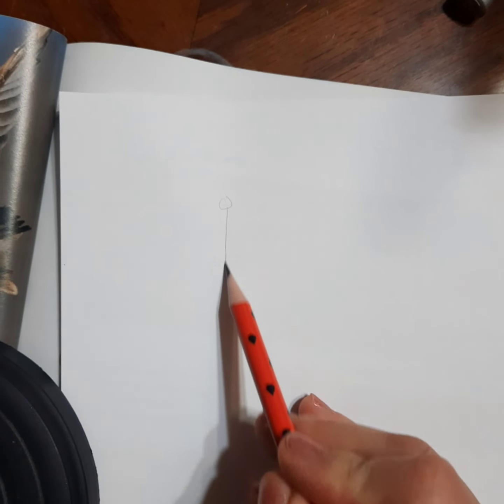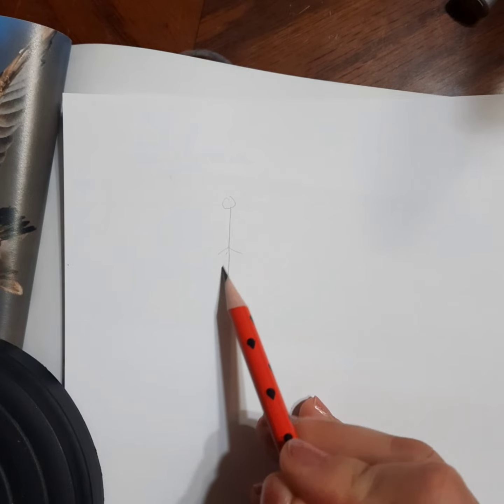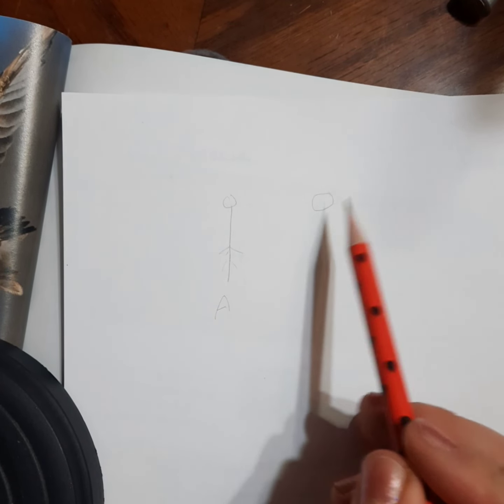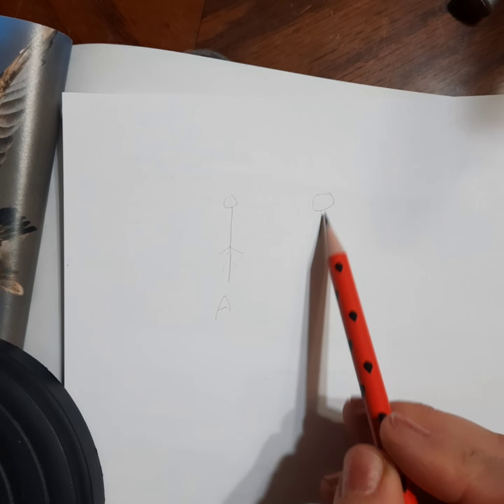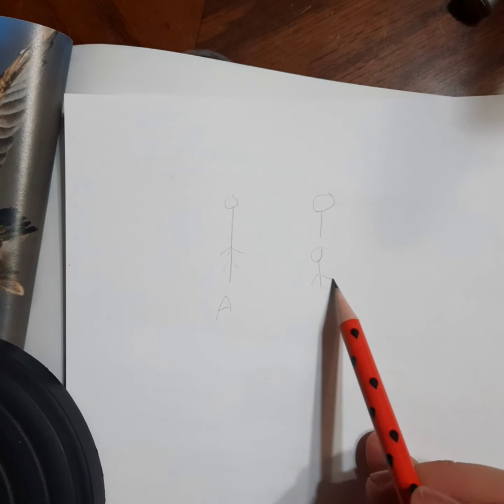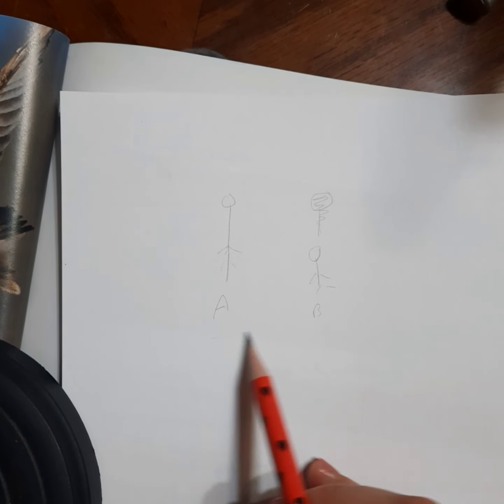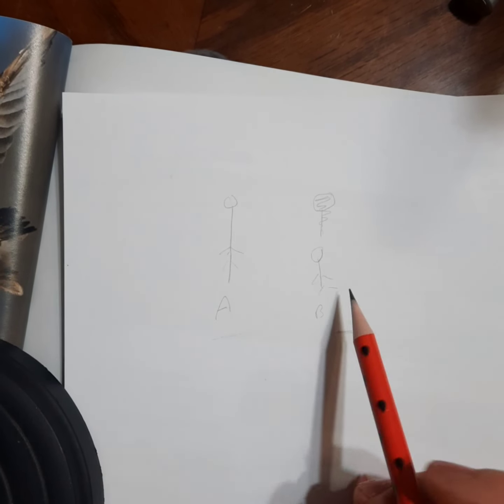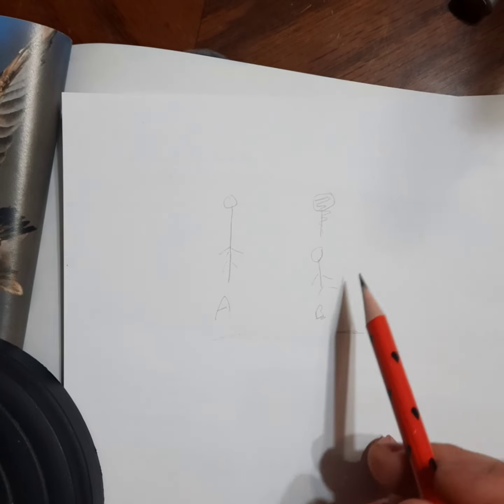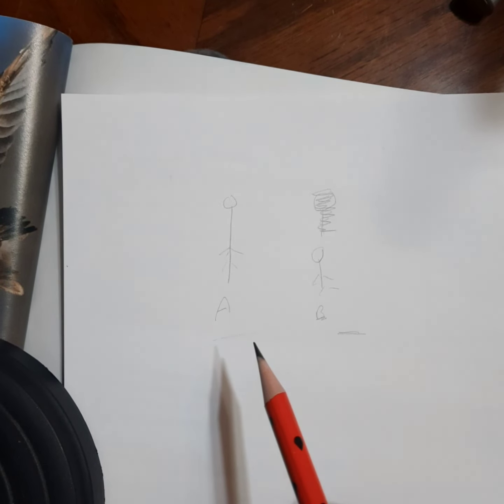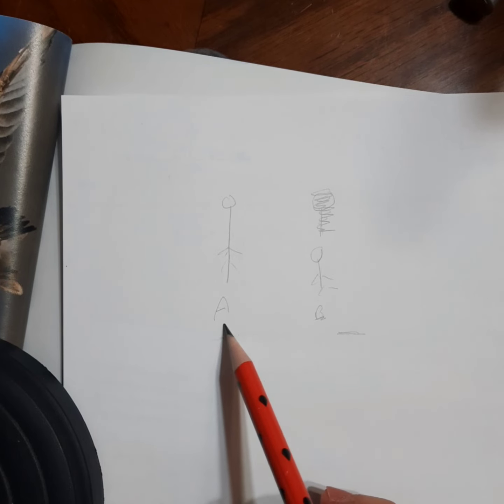This person is called A and this person is called B. You can see it's obvious that B is very short, right? And this person which is A, he is very long or tall.